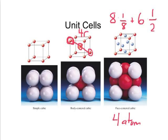Where do the atoms touch in a face-centered cubic? Drawing the front face on the space-filling model, you can see they clearly don't touch along the edge — there's a gap there. But they are touching along the face diagonal, and that face diagonal has a distance in terms of atomic radii of 4r. So again, you can quantify this and eventually find the volume.